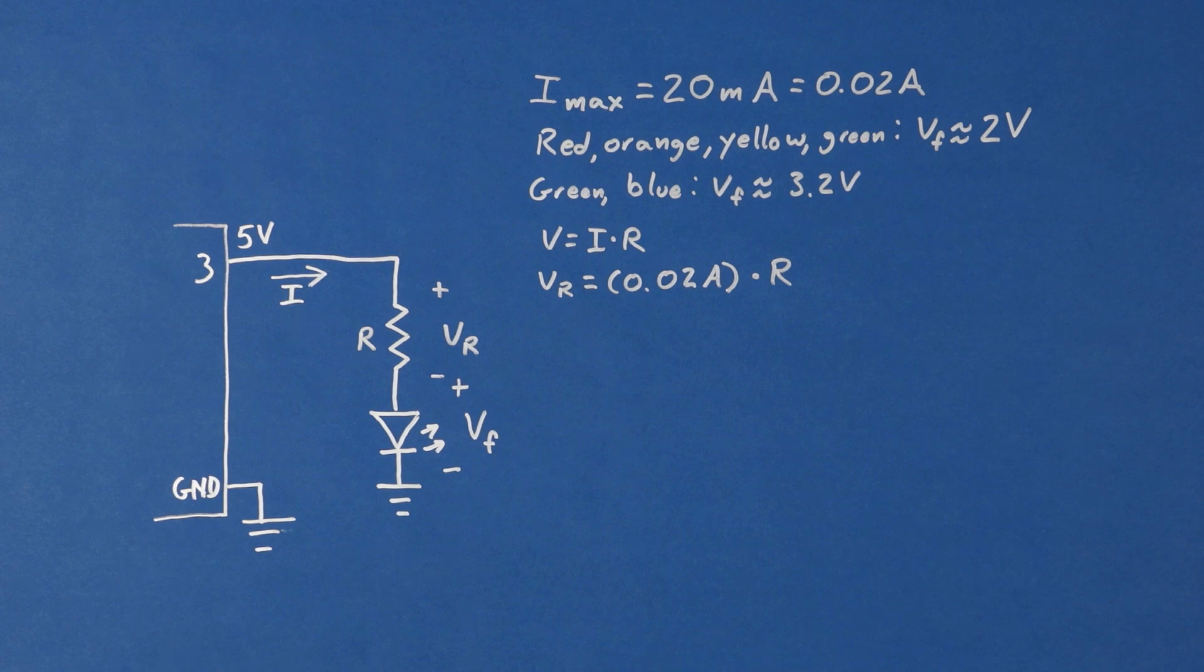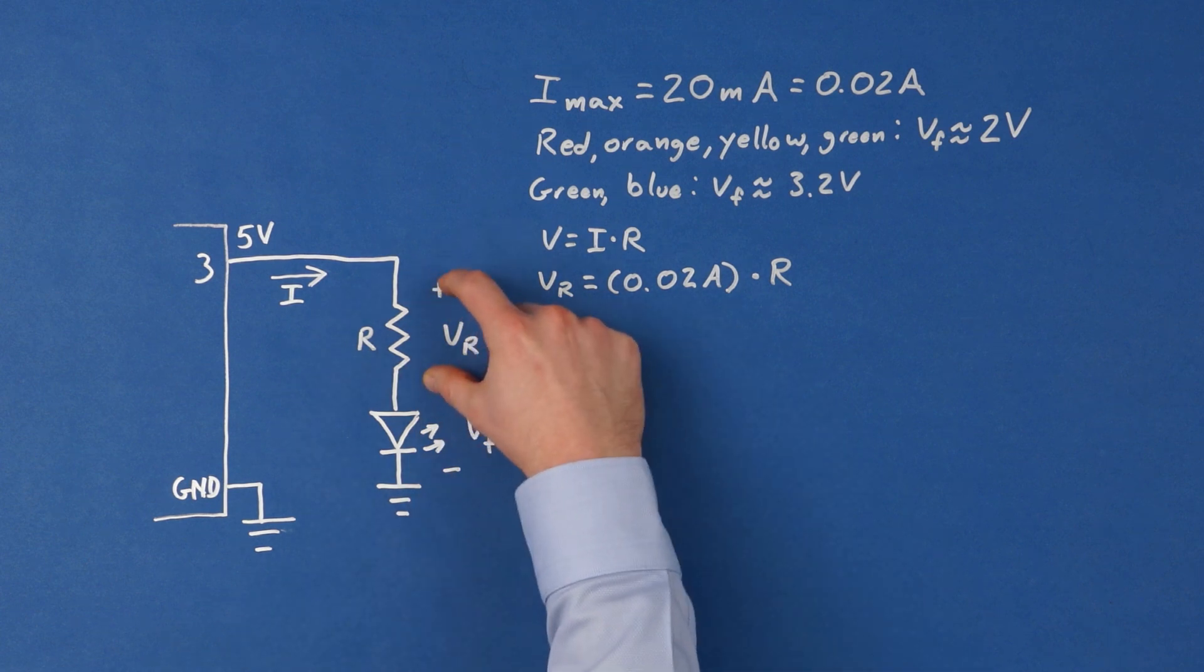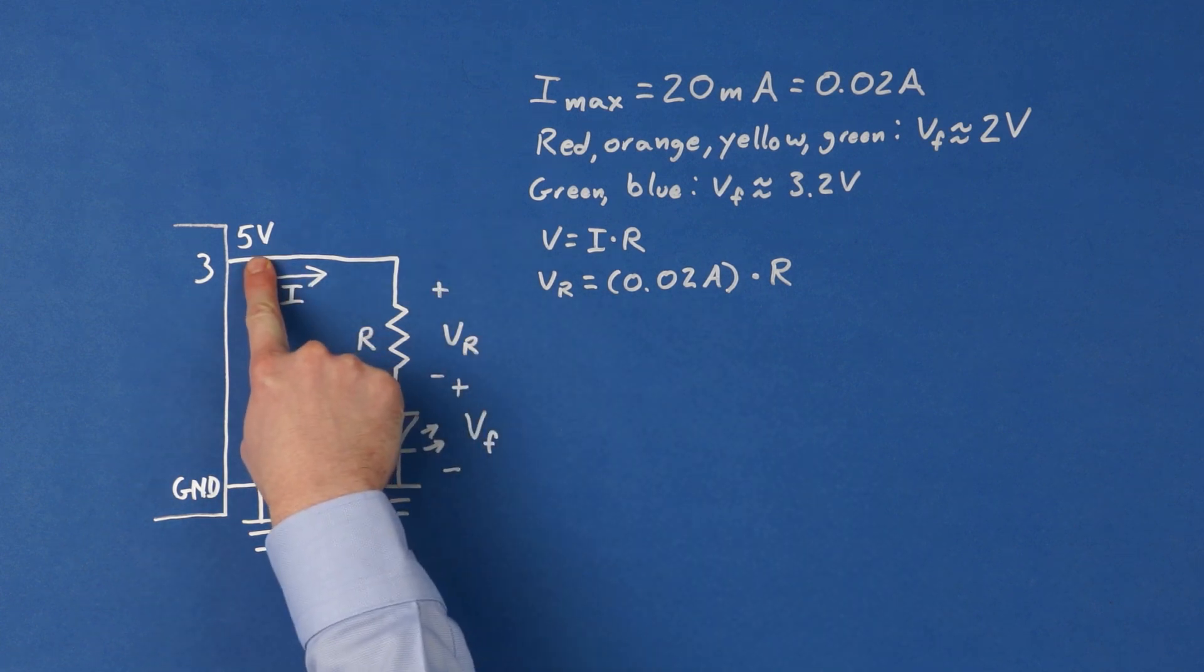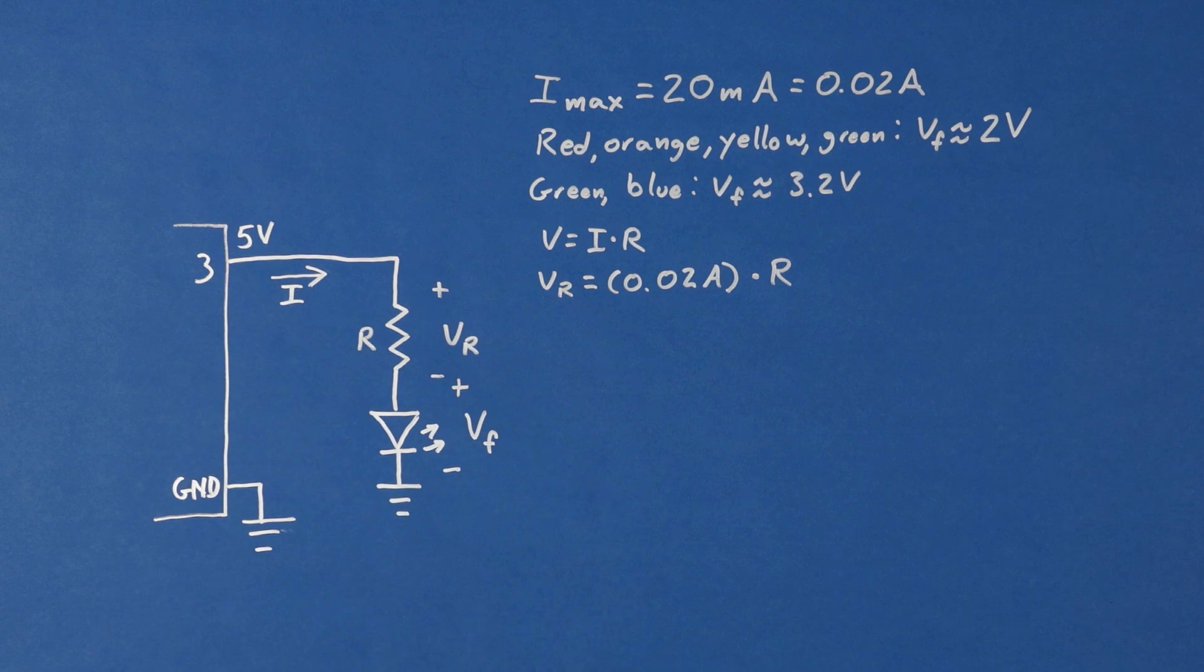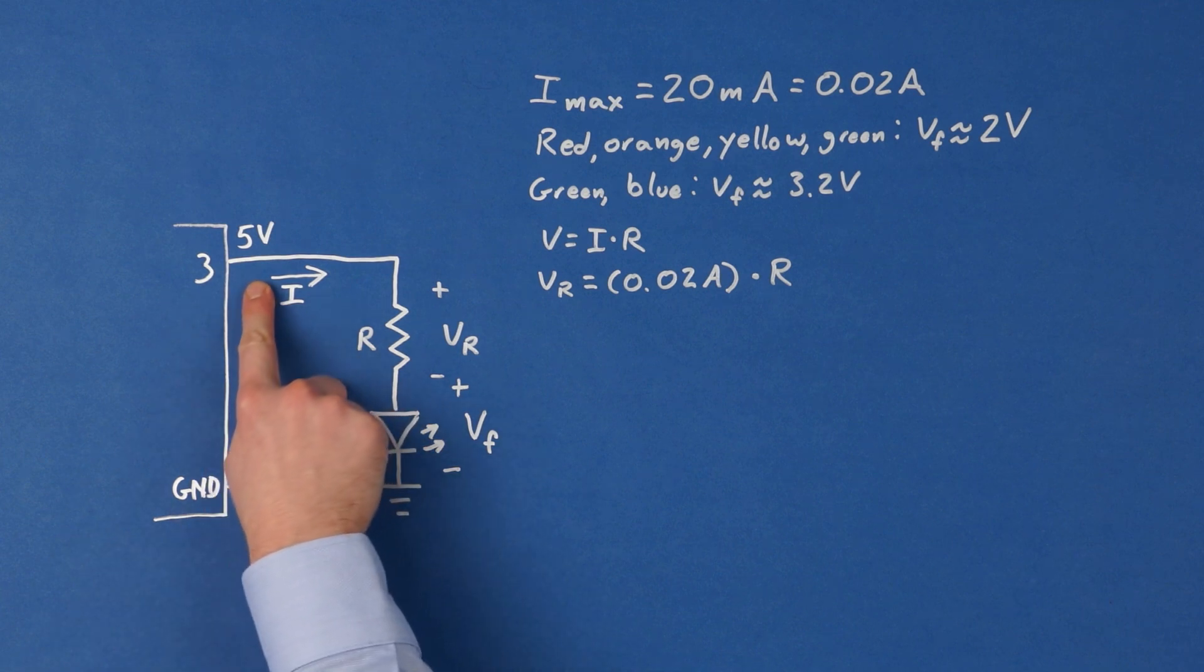We can find the voltage across the resistor, which we'll call VR, by subtracting the LED's forward voltage from the supply voltage. Let's assume the Arduino is a 5 volt Arduino. So when we set a pin to high, that pin will be 5 volts.